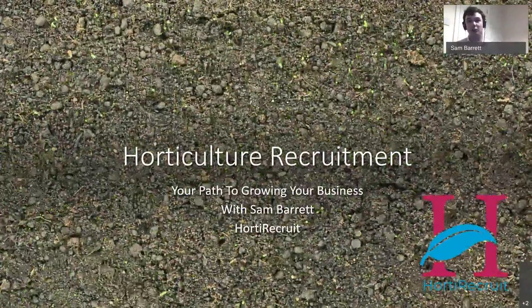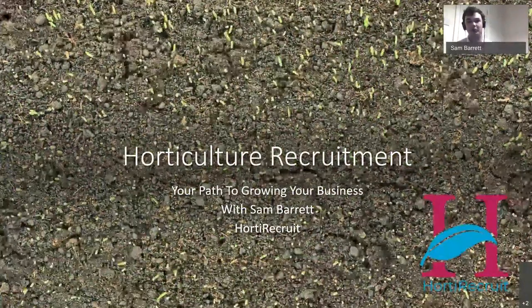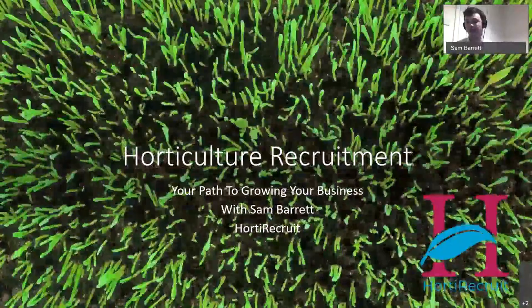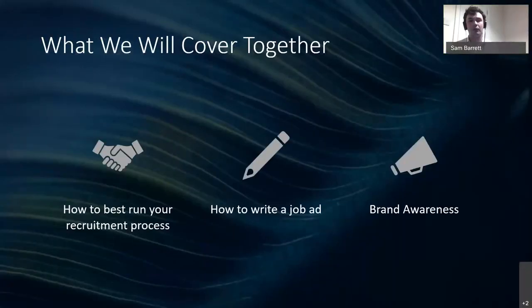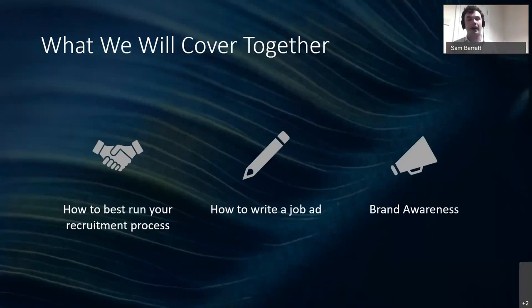I work with Horticulture and we specialize in horticulture recruitment, which was obviously the theme for tonight's discussion. Today we're going to break this down into three main categories: how best to run your recruitment process from start to finish — from when you decide you want to start recruiting all the way through to when you onboard somebody and eventually offboard them. We'll also look at key elements of writing a job description and how to best engage with candidates.